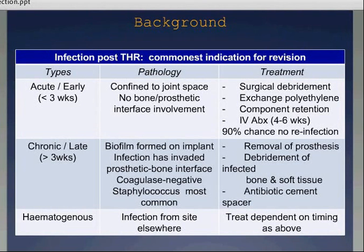The other group is chronic infection, over three weeks, where a polysaccharide biofilm forms around the implant and must be removed. This infection has invaded the prosthetic-bone interface, and coagulase-negative staphylococcus is the most common organism isolated. With this, you have to remove the prosthesis, debride all infected bone and soft tissue, use an antibiotic cement spacer, and then IV antibiotics followed by reconstruction further down the track.